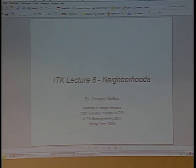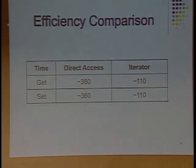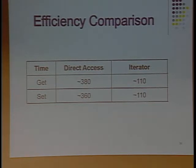This week we are going to talk about neighborhood iterator. I recall we talked about image region iterator - it provides sequential and efficient access to image content. I wrote code to access image content with and without iterators, and this table lists the running time for both cases. No matter read or write operations, direct access running time is much larger than when using image iterators.